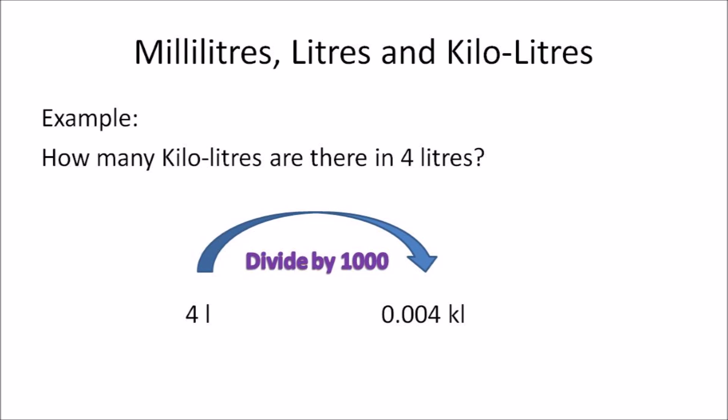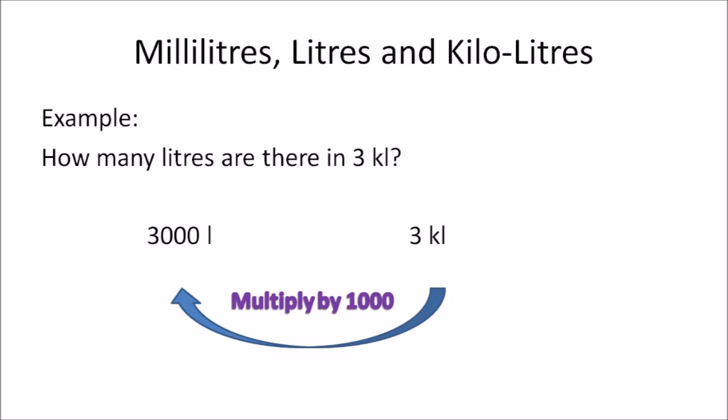In this example, how many kiloliters are there in 4 liters? You need to convert liters to kiloliters. The order of operation is simple — you divide by 1000. So 4 liters divided by 1000 gives you 0.004 kiloliters.